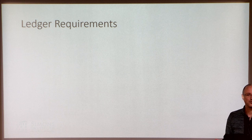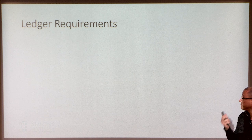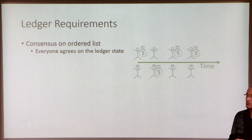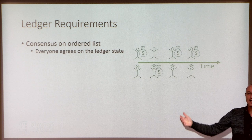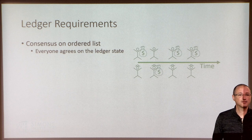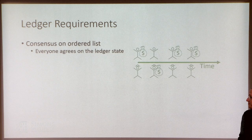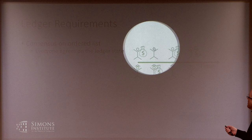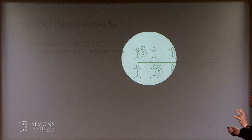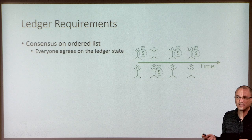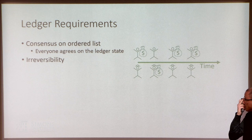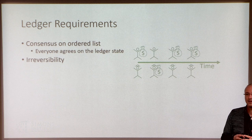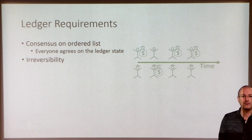Let's start with the ledger — this is basically what all blockchain protocols are trying to build. What do we actually need when we create a ledger? We're trying to create a consensus on an ordered list — think of this as a list of transactions. We care about the order in which transactions happen, and consensus in the sense that everybody should agree on what's in the list and what the order is. We also want this to be irreversible — history doesn't change.